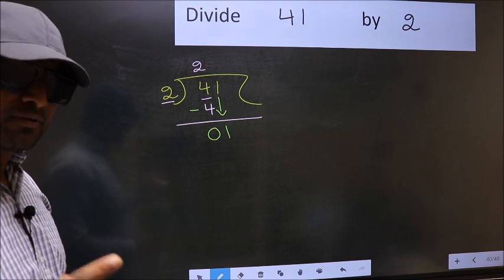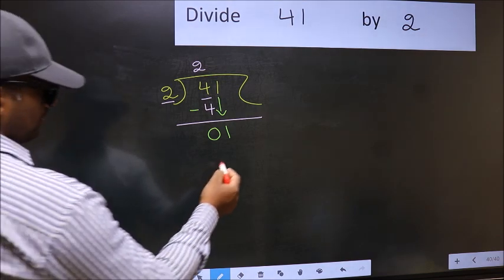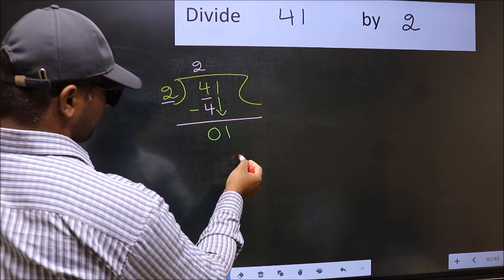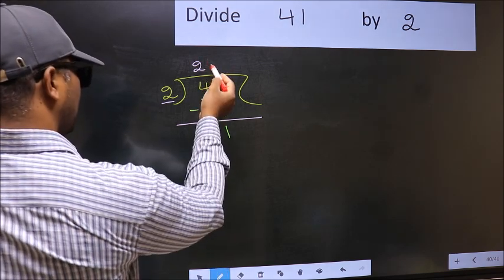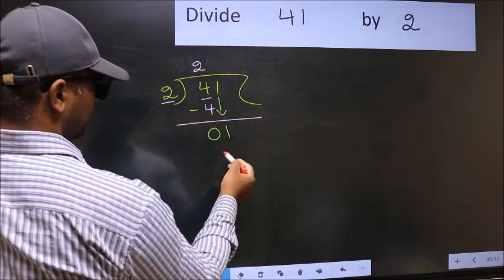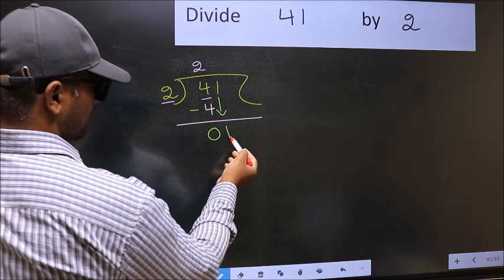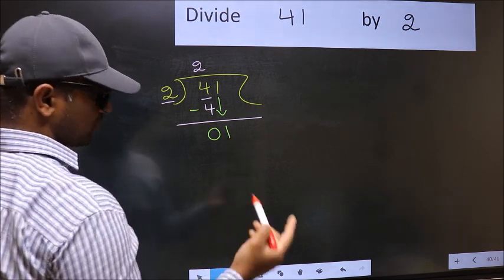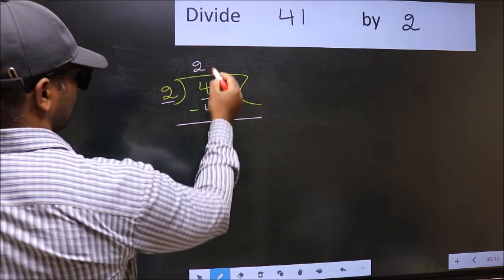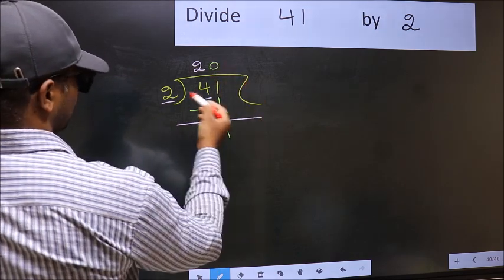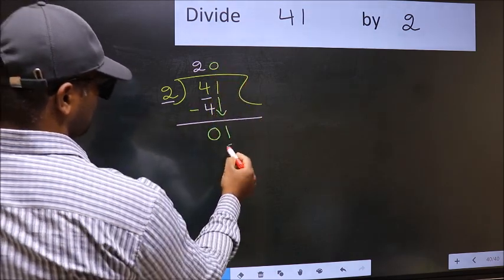Instead, what you should think of is, what number should we write here? If I take 1, so I get 2 here. But 2 will be larger than 1. So what we do is, we take 0 here. So 2 into 0, 0.